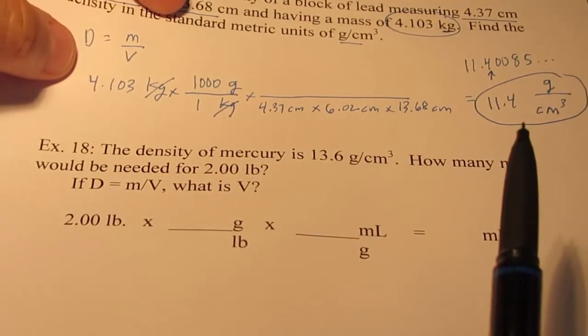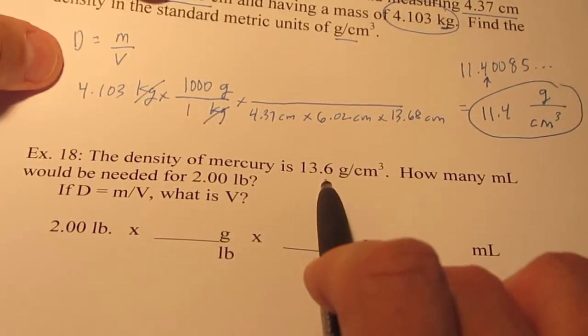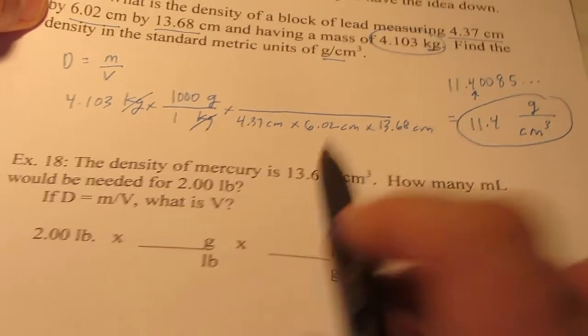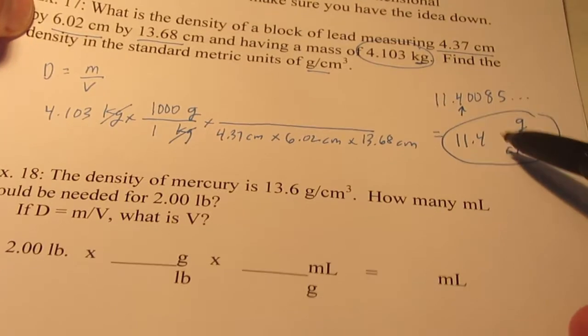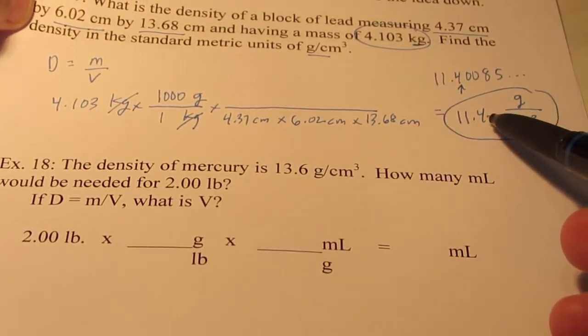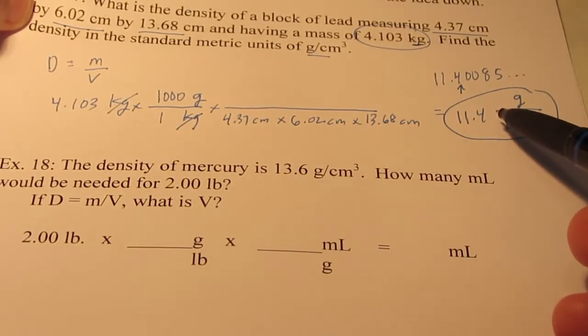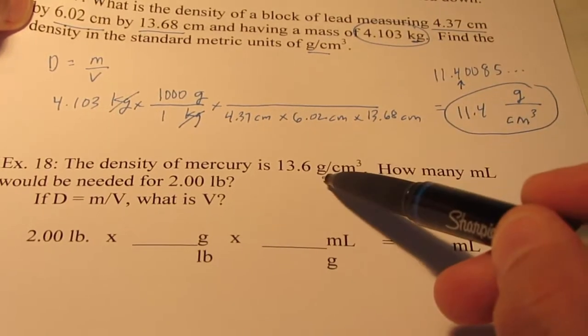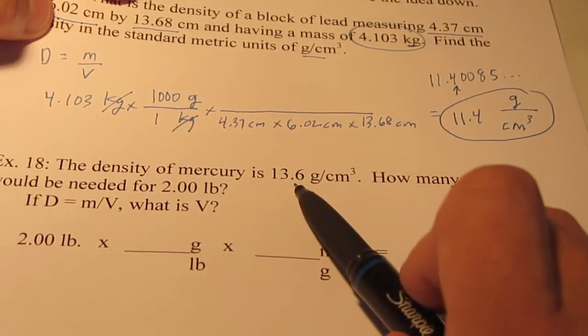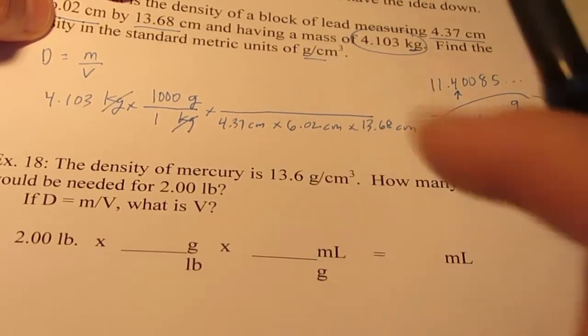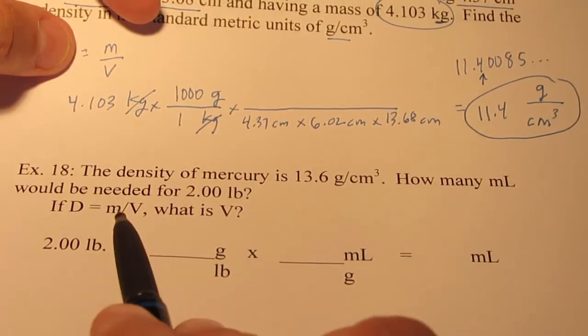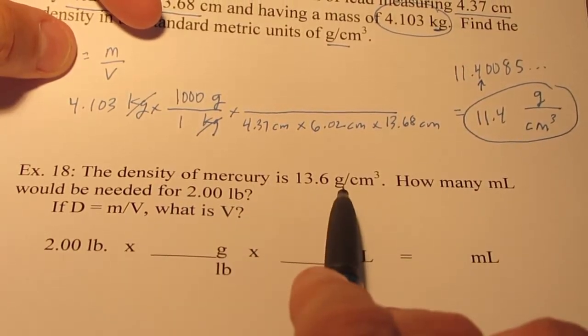Let's try another one. The density of mercury is 13.6 grams per cubic centimeter, so it's denser than lead. That means that if lead were placed in a pool of mercury, the lead would actually float. If the density of the solid is less than the liquid, the solid will float. So, this is a fun little question. How many milliliters would I need for 2 pounds of mercury if that's its density?